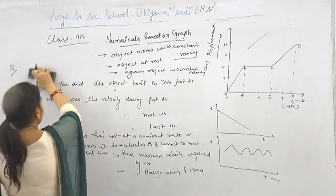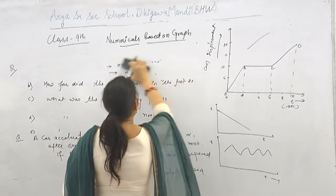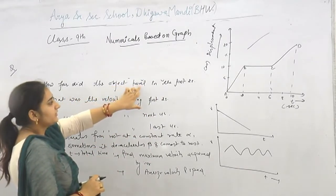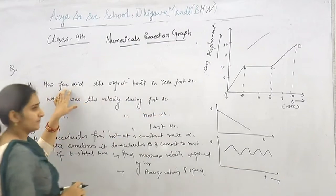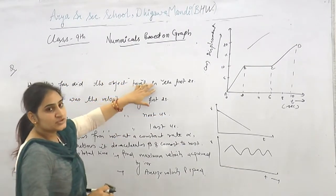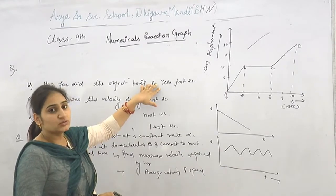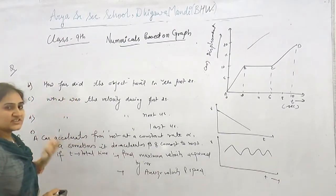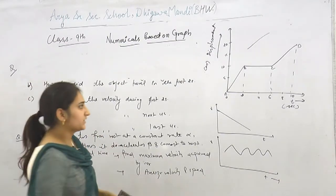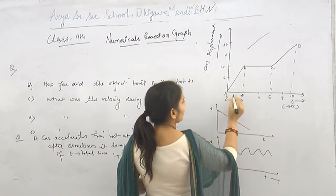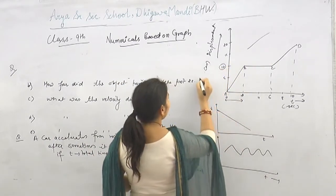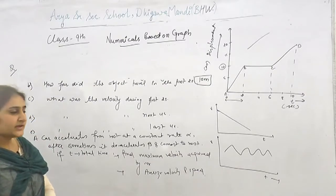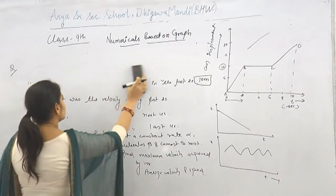Part B asks: how far did the object travel in the first 2 seconds? We are talking about displacement. In the first 2 seconds, the object covered 10 meters. So the answer is simply 10 meters.